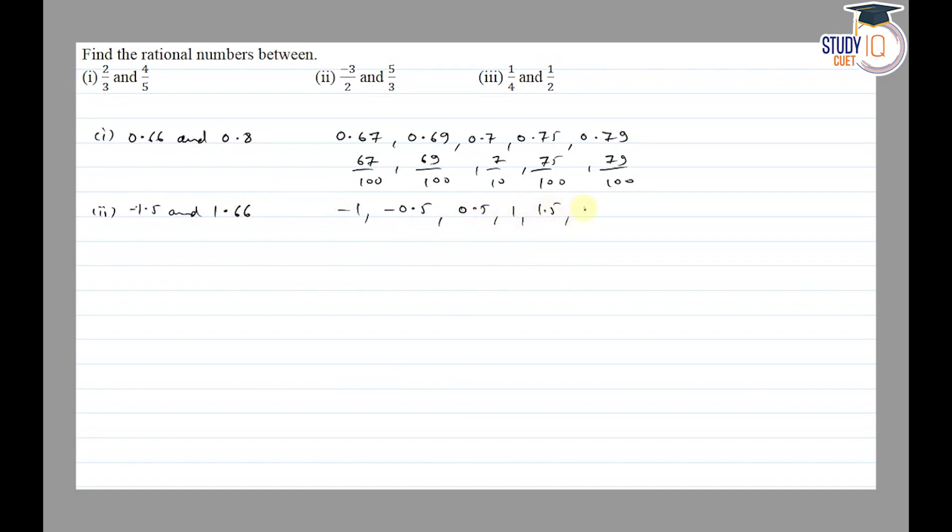Between -1.5 and 1.66, the numbers will be -1, -0.5, 0.5, 1, 1.5, 1.6. These are -5/10, 5/10, 1, 15/10, 16/10. So these are the rational numbers between -1.5 and 1.66.